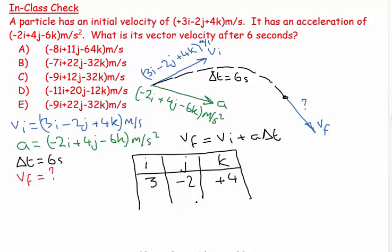Then I have a times time. My time is six seconds, so I can get my second line by multiplying a by 6. So rather than minus 2, I'm going to put down minus 12 because minus 2 times 6 is minus 12, and rather than putting down 4, I put plus 24 because 4 times 6 is 24.